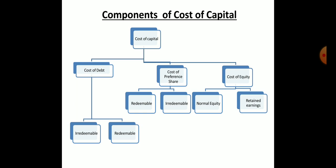In this chapter, we find two types of cost of preference shares: cost of redeemable preference shares and cost of irredeemable preference shares. The cost of equity is divided into two parts: normal equity, which is equity share capital, and retained earnings. We will discuss one by one — first cost of debt, second cost of preference shares, then cost of equity.